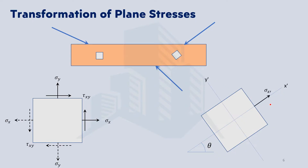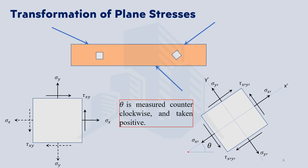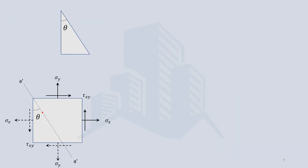When the element is rotated by angle theta, the x-axis becomes x-dash and the y-axis becomes y-dash. The stresses in the x and y directions vary accordingly. We need to derive an equation for the normal stress sigma x-dash and shear stress tau x-dash y-dash on the plane making angle theta with the x-plane, considering a right-angle triangle representing the current state.